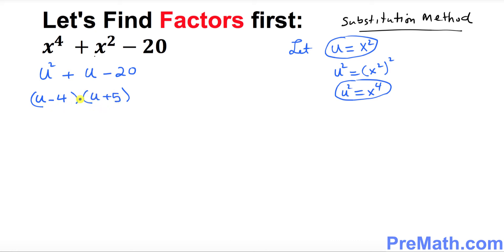So now once we have figured out this one we're gonna go ahead and plug it back into its x variables. So u was how much at the very first place x square. So I'm gonna put down x square minus 4 and once again this is going to be x square plus 5.